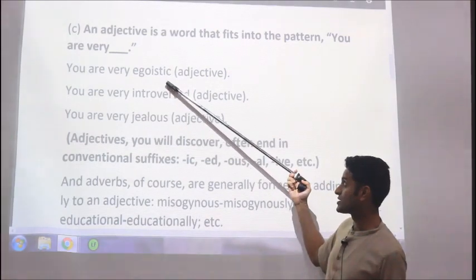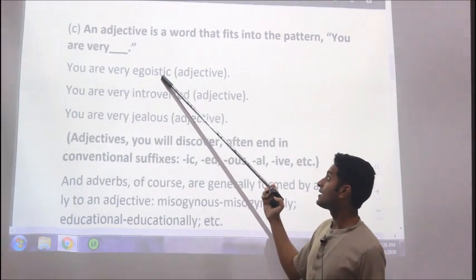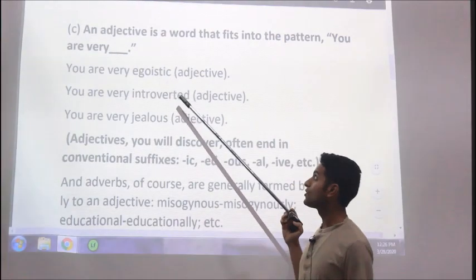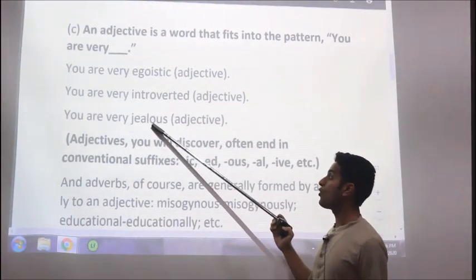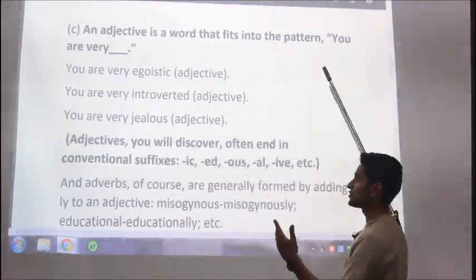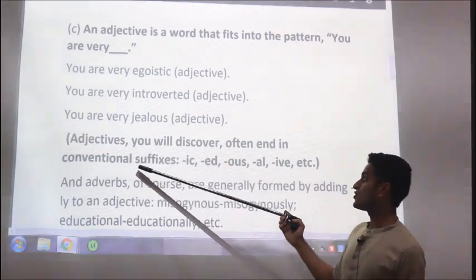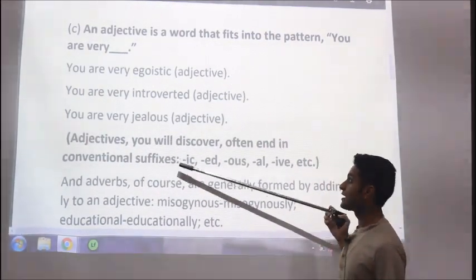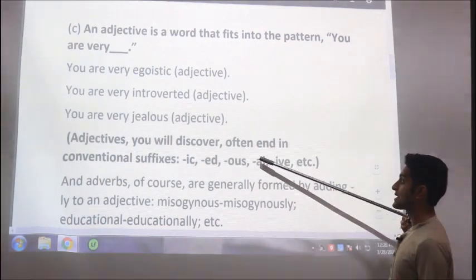So now you will discover that all these words, they end with either IC or ED, OUS, etc. So these are conventional suffixes that an adjective ends with: IC, ED, OUS, AL, IVE.